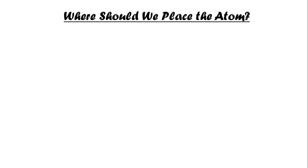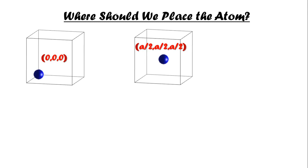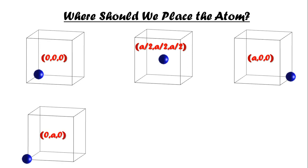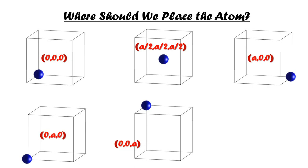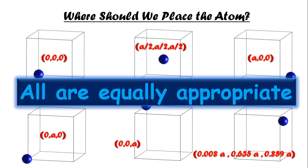The next thing to note is at exactly which point we should place the atom in the primitive cell. At first, (0,0,0) seems favorable. The midpoint (a/2, a/2, a/2) also seems reasonable. But positions like (a,0,0), (0,a,0), or even (0.008a, 0.65a, 0.859a) — if we repeat the unit cell in every direction keeping the atom at the same relative position — the crystal structure remains cubic. So all positions are equally appropriate from a mathematical point of view, no matter how bizarre it seems to our mind.